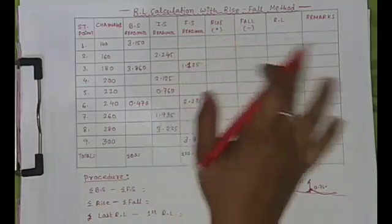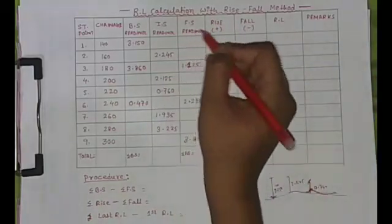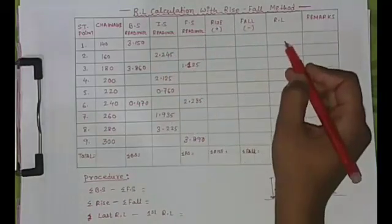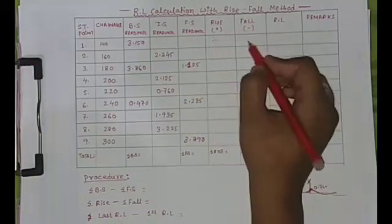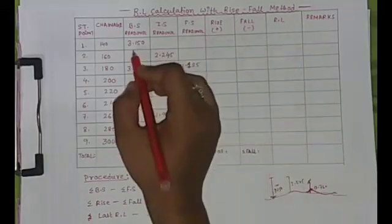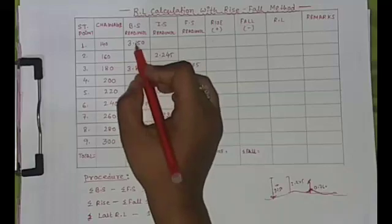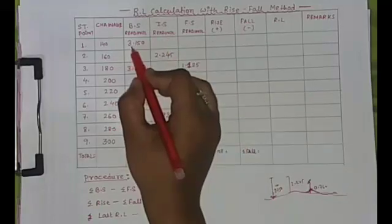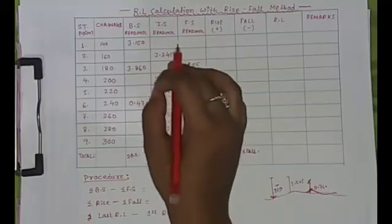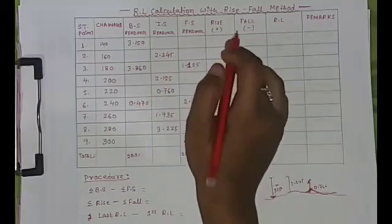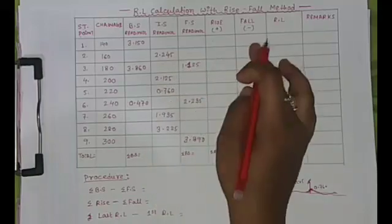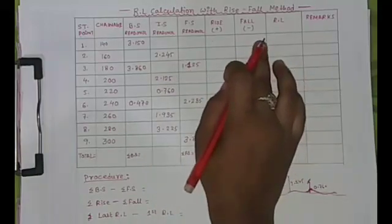Now I am going to start my calculation with the help of the Rise and Fall method. In this method, the RL is calculated using rise and fall values. Rise means the value obtained is positive when subtracting the first reading from the second reading — that value is written in the rise column. If the value comes out negative, it is written in the fall column.